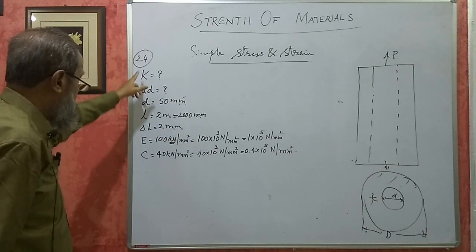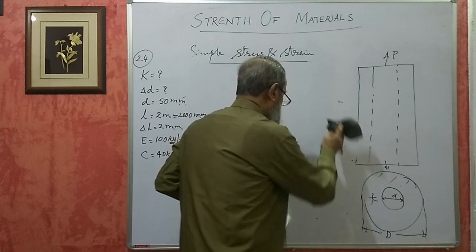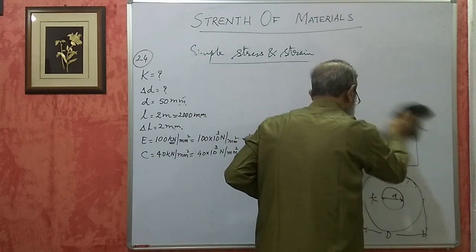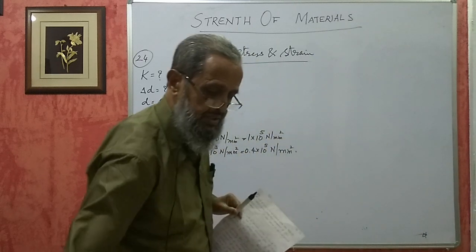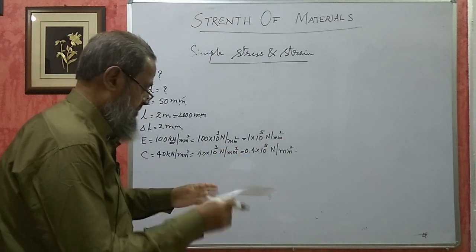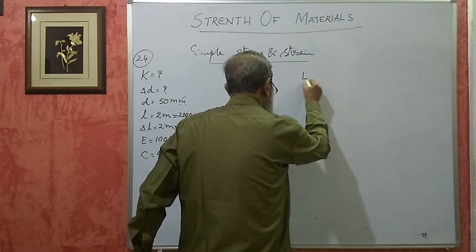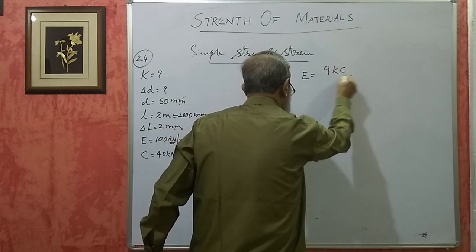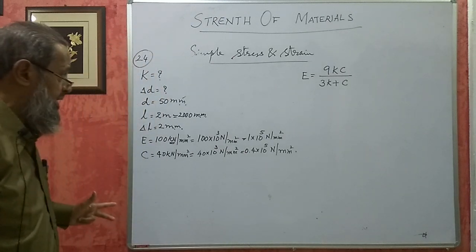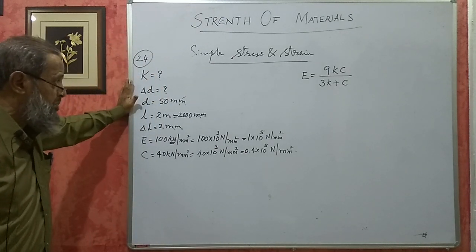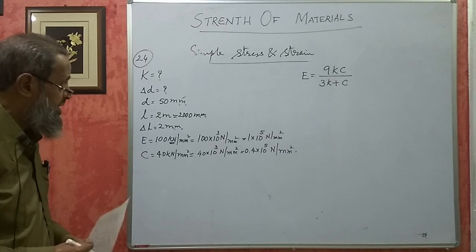With this data, we have to find out bulk modulus and change in diameter. I have a relationship: E is equal to 9kG divided by 3k plus G. This relationship connects Young's modulus, rigidity modulus, and bulk modulus — E, G, and k. Out of these three, we know E and G are given. We have to find out k.